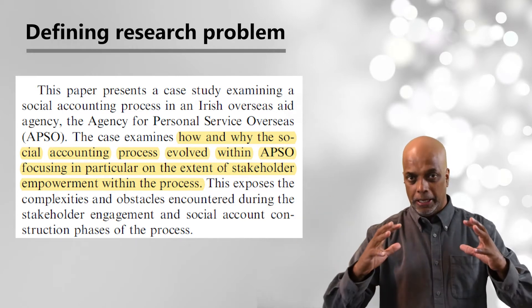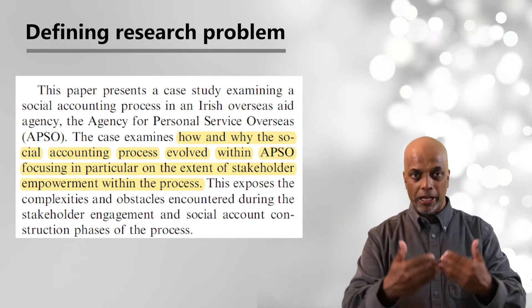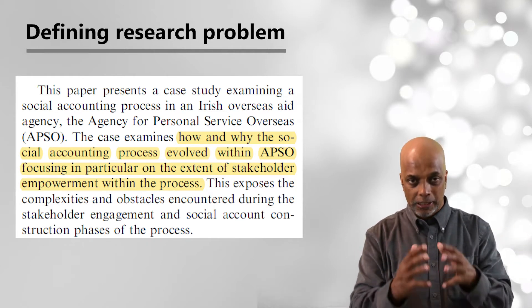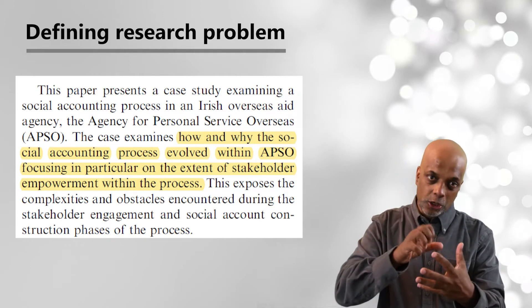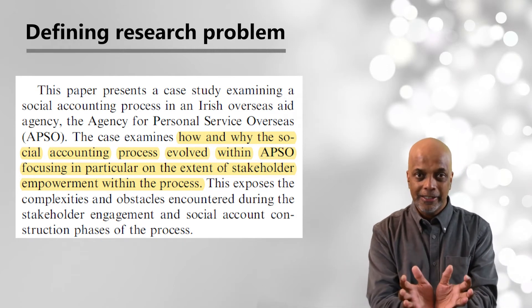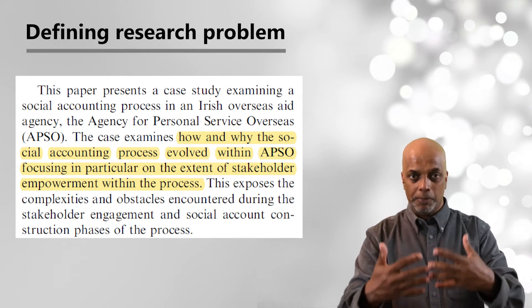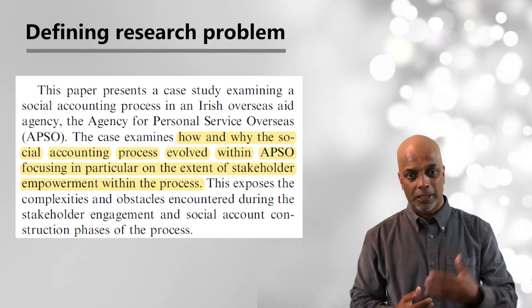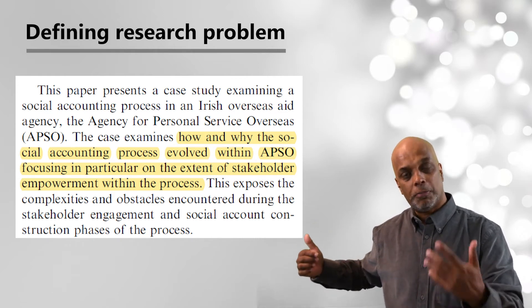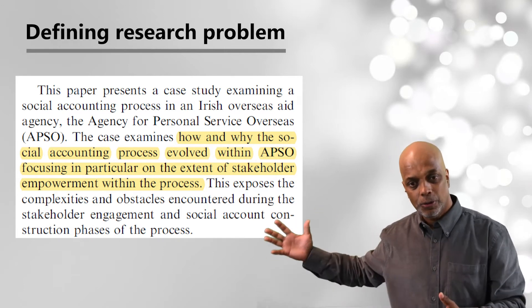This basically implies that he is going to use stakeholder theory, or a variation of something associated with stakeholder theory. So there is a theoretical angle, and a concentration on a specific case articulating the particular accounting problem he wants to study — namely the manner in which the social accounting process evolved in this particular company. That's how he spells it out.